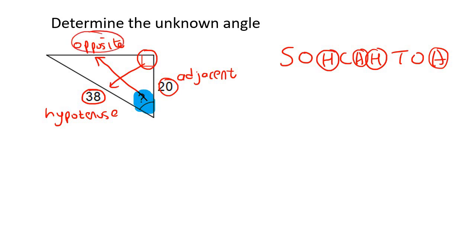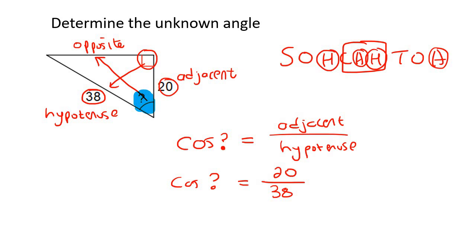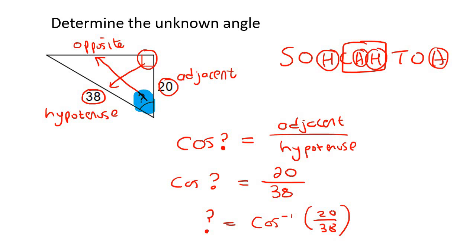You could use Pythagoras to find the opposite, but we want to make as little work as possible. So we use cos. Say cos of this unknown angle is equal to adjacent over hypotenuse — that is, 20 over 38. To find the angle, use inverse cos by pressing the second function or shift button on your calculator. If you get that correct, you should get an angle of 58.24 degrees.